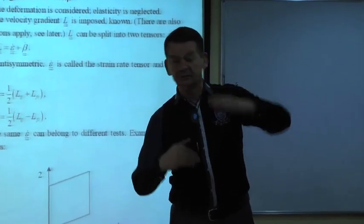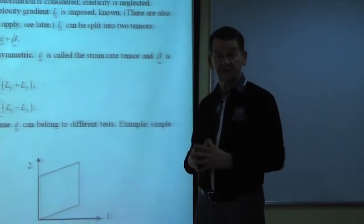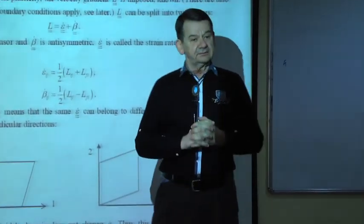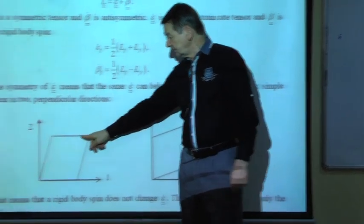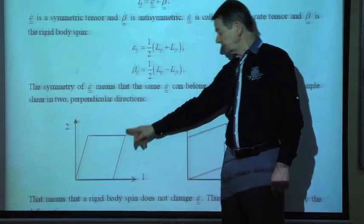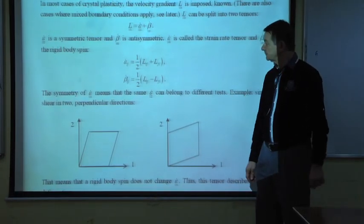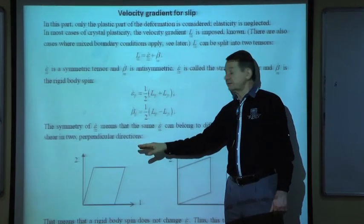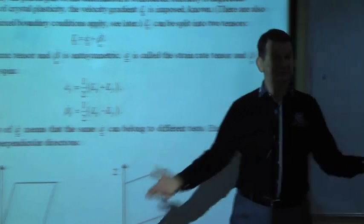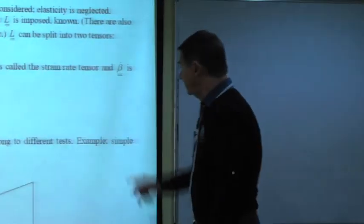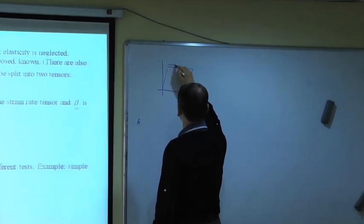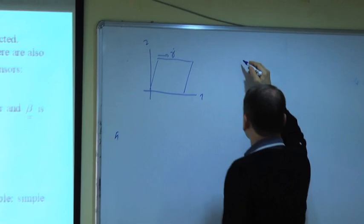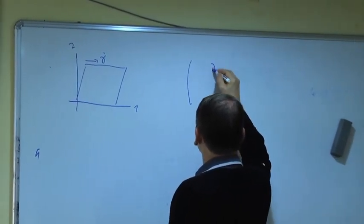The strain rate tensor produced by slip is the symmetric part of the glide velocity gradient: (Mij + Mji)/2 · γ̇_s. For a small increment of time, the orientation change can be neglected because it is small — and we can update it. We also have the macroscopic strain rate, which is the symmetric part of the macroscopic L. The strain produced by slip has to equal the macroscopic imposed strain rate, since we only consider slip as a deformation mechanism. This gives us the so-called strain equation of crystal plasticity.